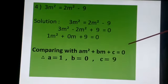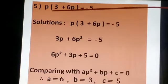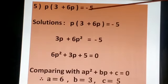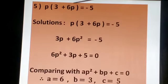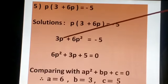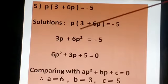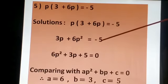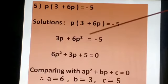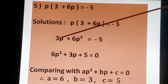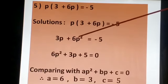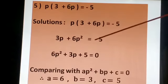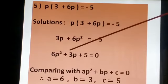P(3 + 6P) = -5. P बाहर है तो P से multiply करेंगे: 3P + 6P² = -5. -5 left में जाएगा तो +5 होगा. Arrangement: 6P² + 3P + 5 = 0. Compare with equation: A = 6, B = 3, C = 5.